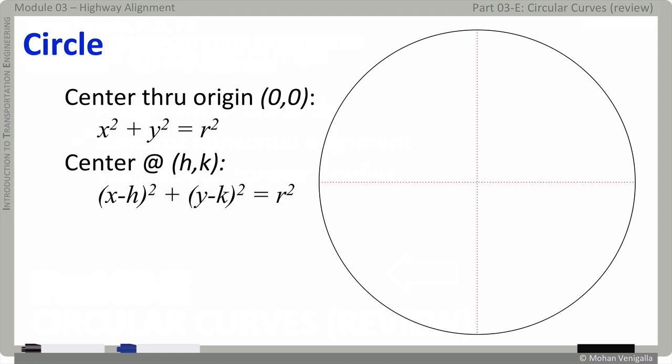Of course circular curves are based on the properties of a circle and the properties of a circle are derived from this equation of a circle which is x squared plus y squared equals r squared when the origin of the circle is at 0, 0.